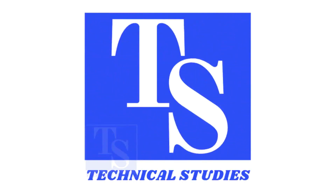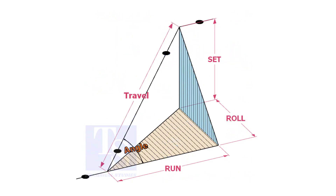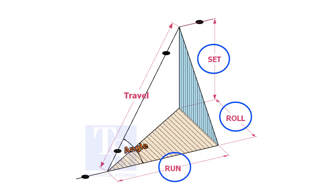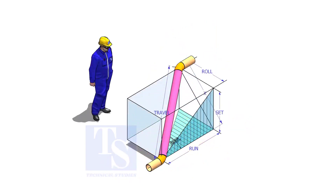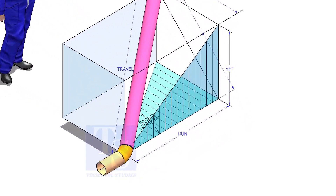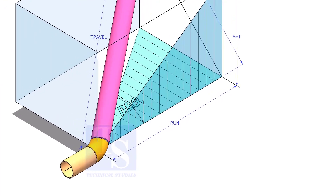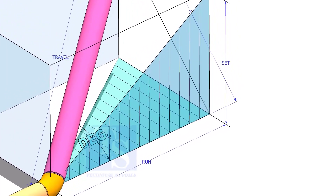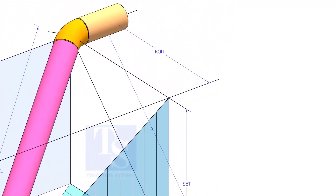Welcome to Technical Studies. In a piping drawing of a double rolled offset, usually the dimensions of the run, set, and roll are given. In this video, I will show you how to calculate the travel length and the including angle of a double rolled offset pipe.